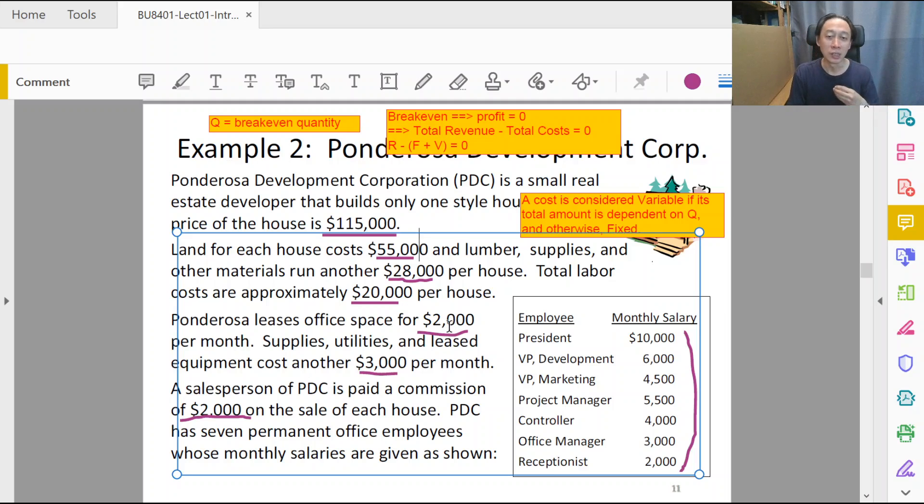How about supplies, utilities, leasing of equipment? More houses we sell doesn't mean we pay more, right? So it is independent of q. It is dependent on month but not dependent on q, so it's fixed.